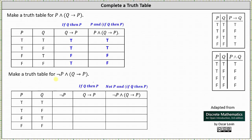Next we're asked to make a truth table for not p and if q then p. The only difference in this statement is we're taking the negation of p, which means we include an extra column for not p. Not p is false when p is true and not p is true when p is false, so the column for not p is false, false, true, true. We already know from above that the column for if q then p is true, true, false, true.